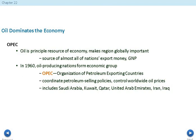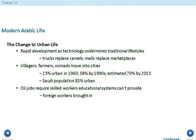Changes to urban life: rapid development and technology are undermining traditional lifestyles. Trucks replace camels, malls replace marketplaces, and villagers, farmers, and nomads are moving to cities — a process called urbanization. The region was 25% urban in 1960, 58% in the 1990s, and was estimated at 70% by 2015. Saudi Arabia's population is now 83% urban. Oil jobs require skilled workers that local educational systems can't yet provide, so foreign workers are brought in, which creates cultural friction and pushes countries to improve their education systems.